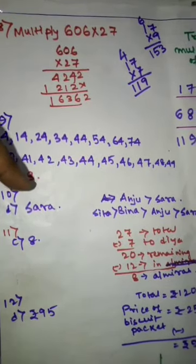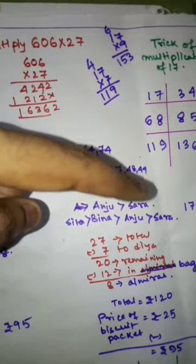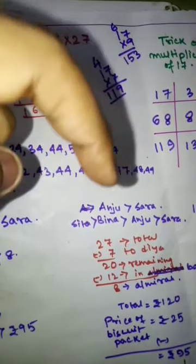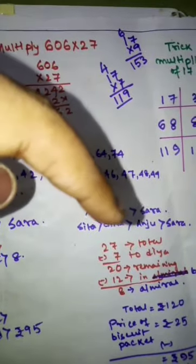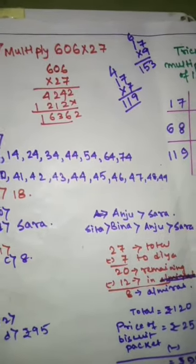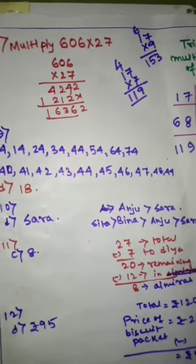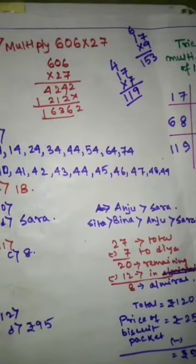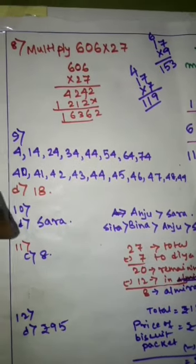For question number 10, Anju is taller than Sara but shorter than Bina. So Bina is taller than Anju but Bina being taller than Anju is also shorter than Sita. So we can say that Sita is the tallest while Sara is the shortest. So the shortest among the 4 girls would be Sara.